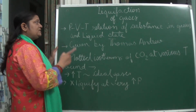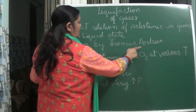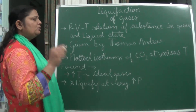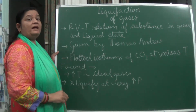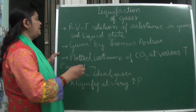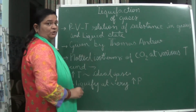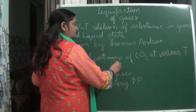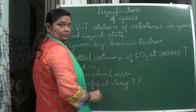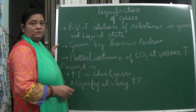This was first given by Thomas Andrews. He plotted isotherms of carbon dioxide at various temperatures. We know what an isotherm is — temperature is kept constant but at a certain value, and so we draw these isotherms.